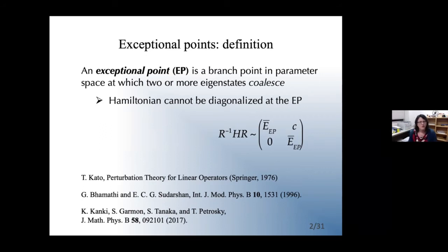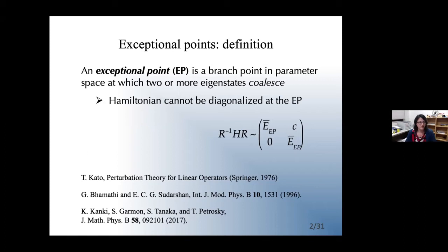We start with the definition. An exceptional point is a branch point in the parameter space of a given Hamiltonian at which two or more eigenstates coalesce. A key point about the exceptional point is that the usual diagonalization scheme for the Hamiltonian breaks down, and in the most reduced form of the Hamiltonian you will have at least one Jordan block.